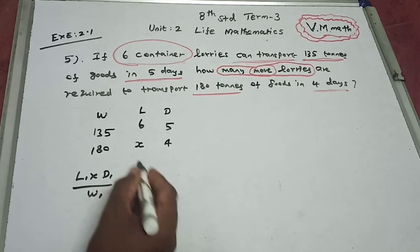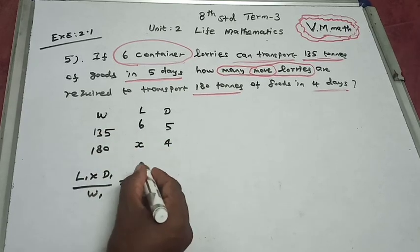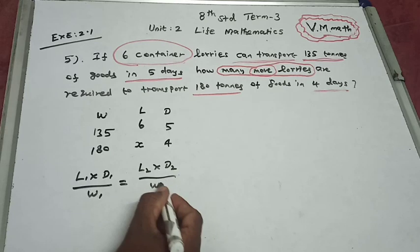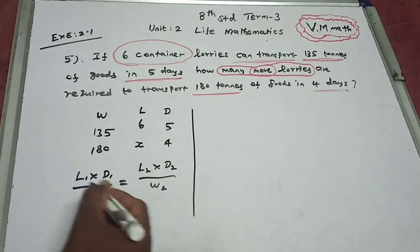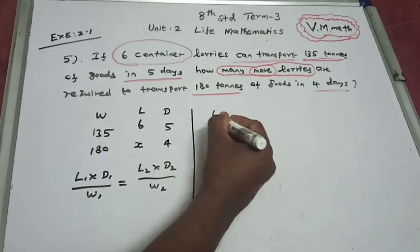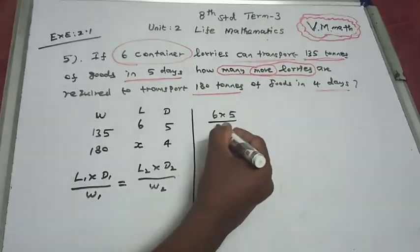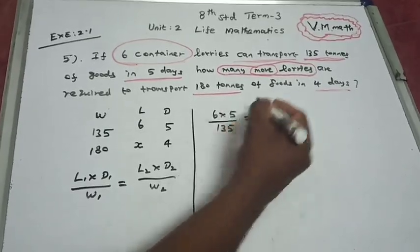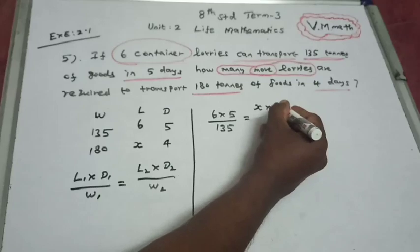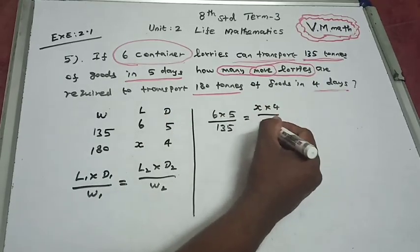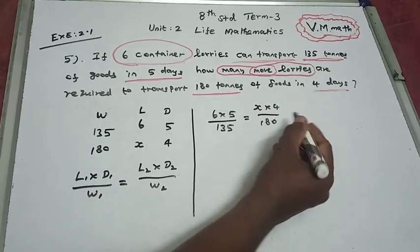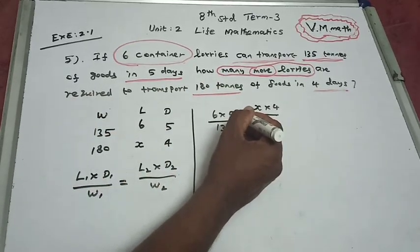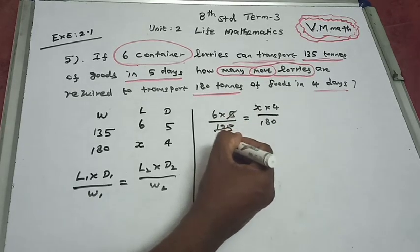Substituting the values: l1 into d1 is 6 into 5, divided by 135, equals x into 4 divided by 180.